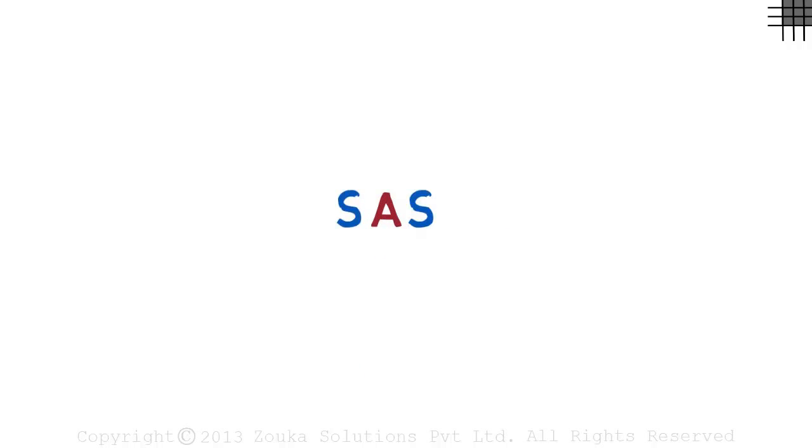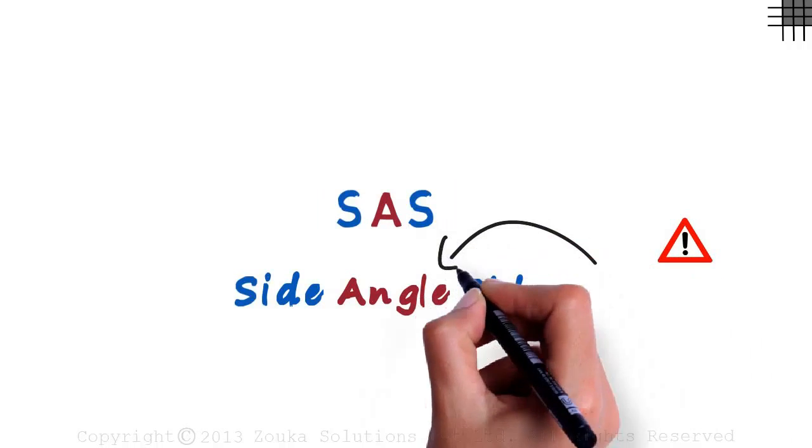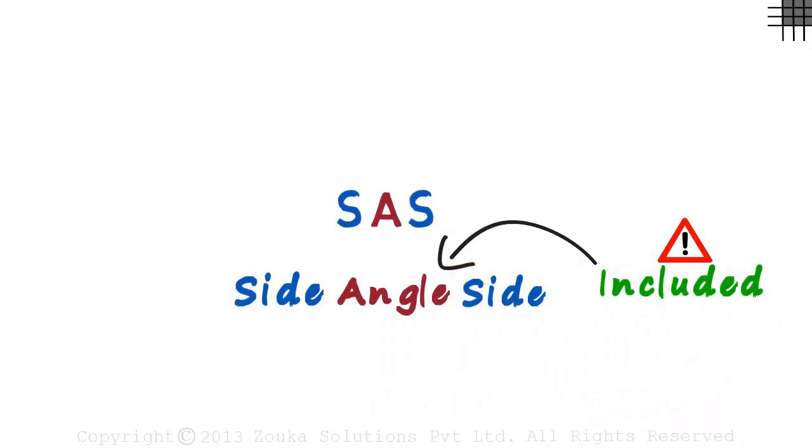As you would have already guessed, SAS means side angle side. But there's something important we need to know here. The angle must be included between the two sides given. We will understand what included means in a bit.